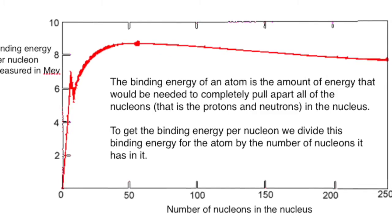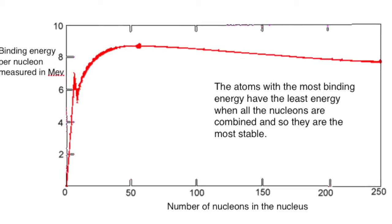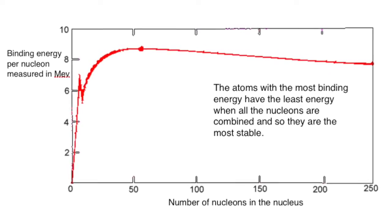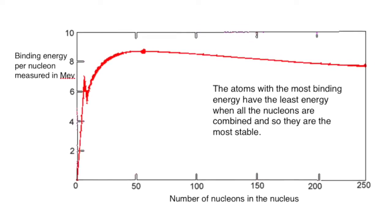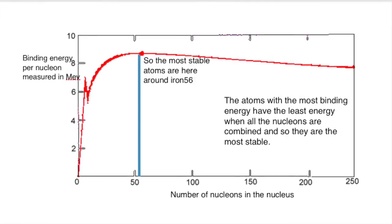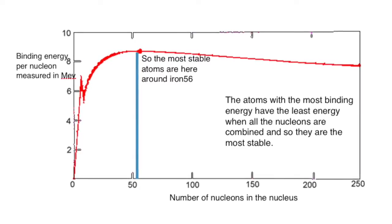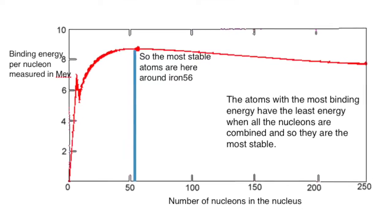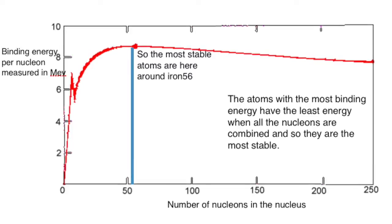Those atoms with the most binding energy per nucleon are the most stable. So, these are the atoms which are opposite the peak of the graph, which, if you read from the x-axis, are the atoms which have a nucleon number around 56, particularly iron.